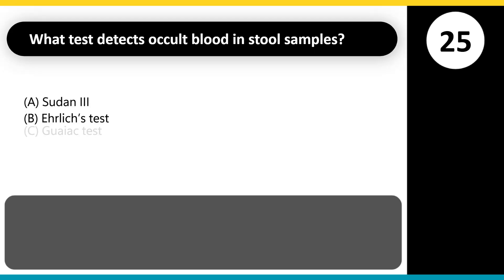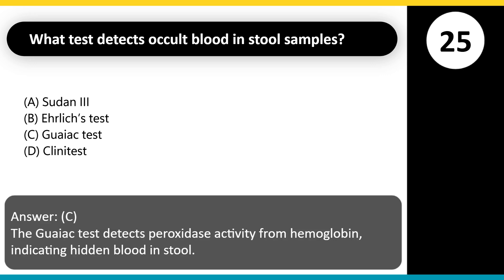What test detects occult blood in stool samples? A. Sudan III. B. Ehrlich's test. C. Guaiac test. D. Clinitest. Answer: C. The Guaiac test detects peroxidase activity from hemoglobin, indicating hidden blood in stool.